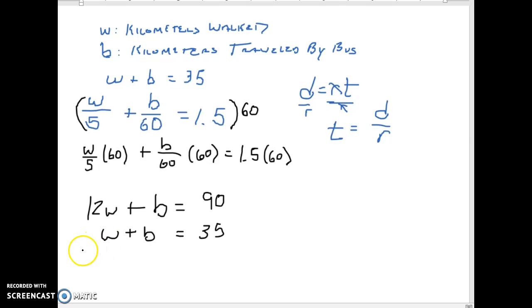What I'll do is I'll subtract the entire bottom equation from the top equation. I could multiply it by negative 1 and add it, but it's just as easy to subtract instead. So 12W minus W is going to give me 11W. B minus B leaves nothing. 90 minus 35 is 55.